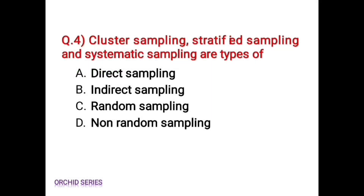Next question: cluster sampling, stratified sampling, and systematic sampling are types of — Option C, random sampling. Cluster sampling, stratified sampling, and systematic sampling are types of random sampling.